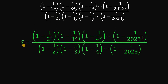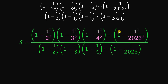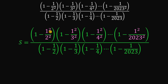Our goal is to find the value of this variable S. To answer this question, let's focus on the square numbers: 2 squared, 3 squared, 4 squared, and 2023 raised to the power of 2, because those numbers are the hints to answer this kind of question. The reason is that the 1 in the numerator can be rewritten as 1 raised to the power of 2, giving us 1 squared over 2 squared, 1 squared over 3 squared, and so on.